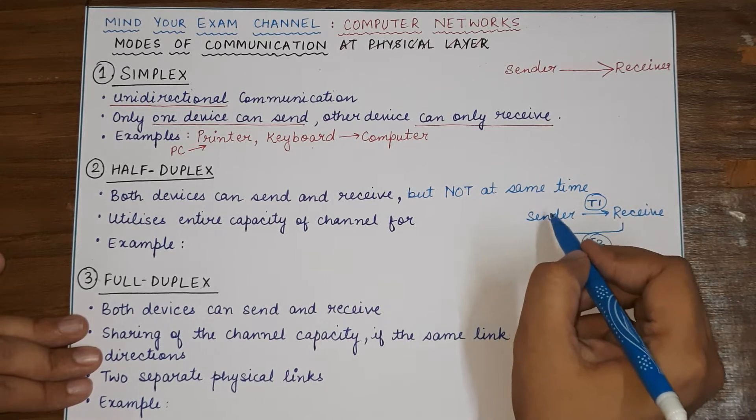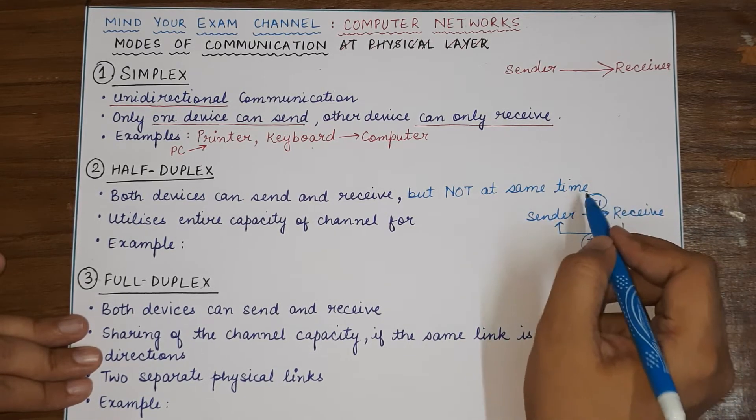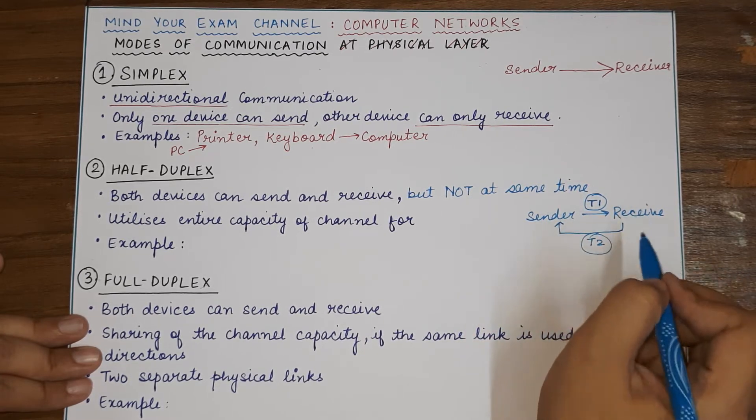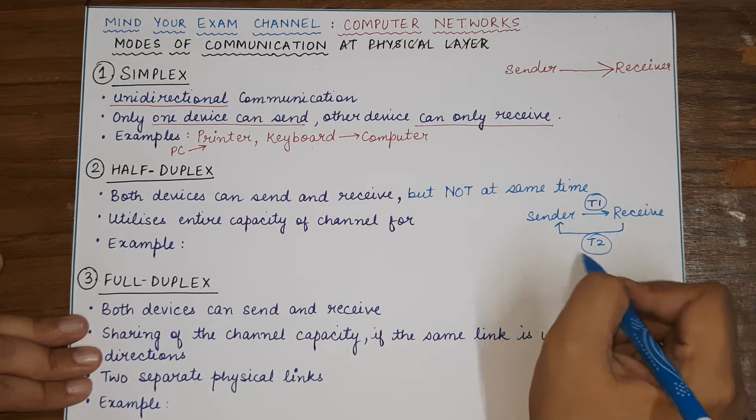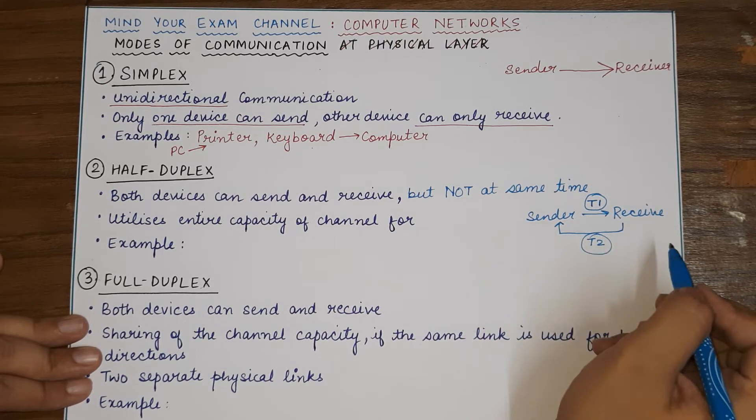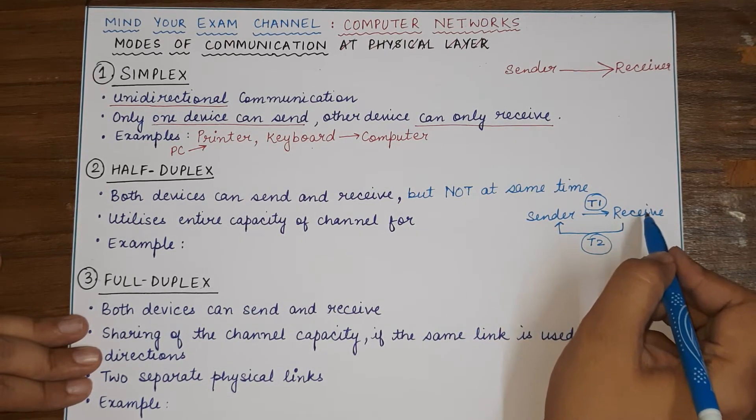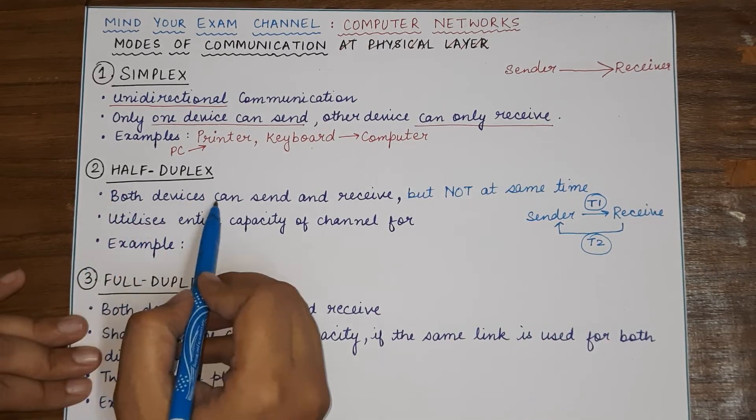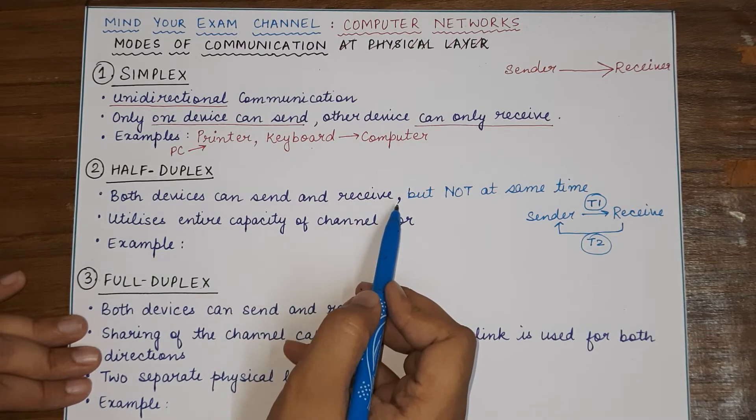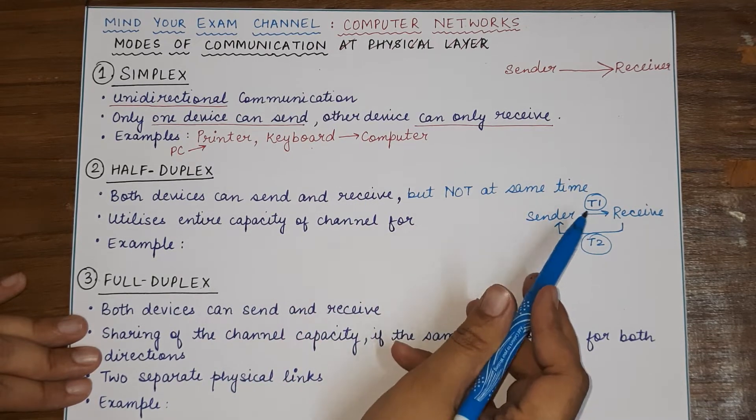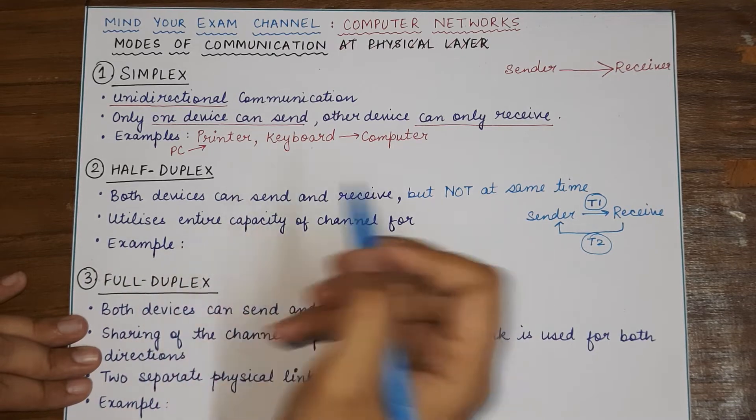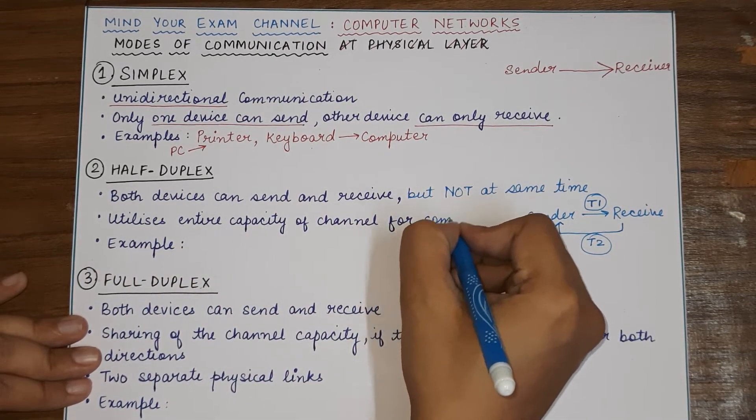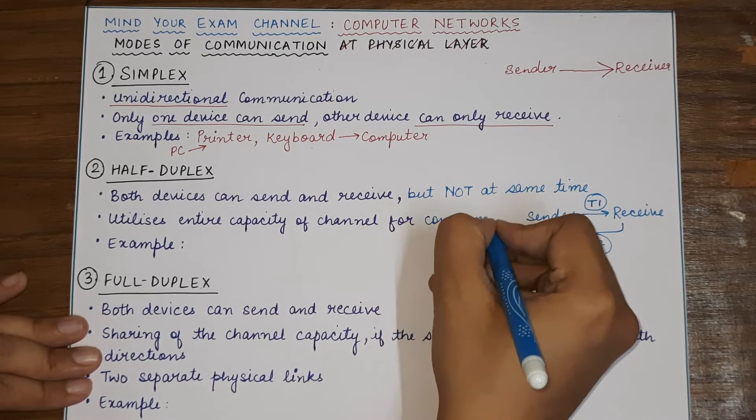So, when sender is sending, it will be at one point in time. And when this communication ends, at some other point in time, communication 2 at point T2 will begin where the direction of data is reversed. So, in half-duplex, both devices can send and receive data but not at the same time. And it utilizes the entire capacity of the channel for communication. So, what does that mean?